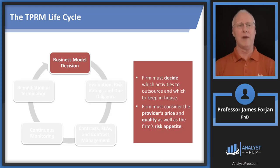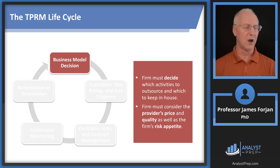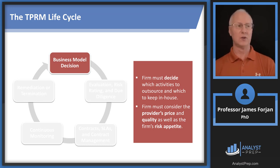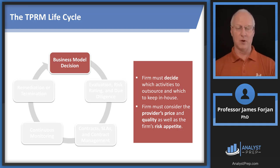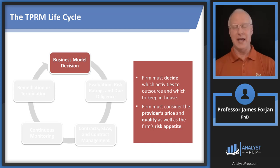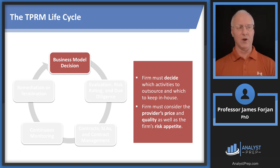This life cycle is probably where the majority of exam questions will come from. Let's work through it starting with the business model decision. When I was Jim's financial institution, I had to decide which functions to outsource and which to keep in-house — a marginal cost, marginal benefit decision — relating it back to the chief risk officer and the board of directors. What the chapter emphasizes is the risk appetite of the firm: sometimes we don't want to take that extra third-party risk, and sometimes we do.